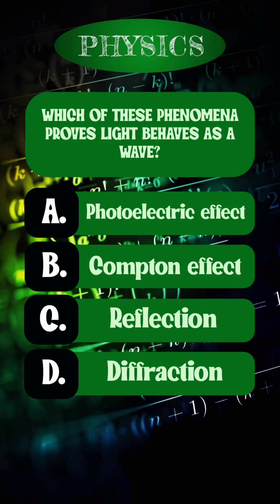Question 1. Which of these phenomena proves light behaves as a wave? Right answer is option D, diffraction.